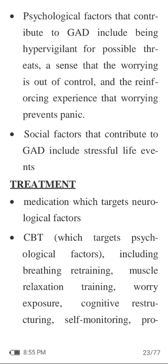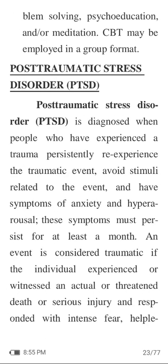Psychological factors that contribute to GAD include being hypervigilant for possible threats, a sense that the worrying is out of control, and the reinforcing experience that worrying prevents panic. Social factors that contribute to GAD include stressful life events. Treatment includes medication targeting neurological factors, and CBT targeting psychological factors including breathing retraining, muscle relaxation techniques, worry exposure, cognitive restructuring, self-monitoring, problem-solving, psychoeducation, and meditation. CBT may be employed in a group format.